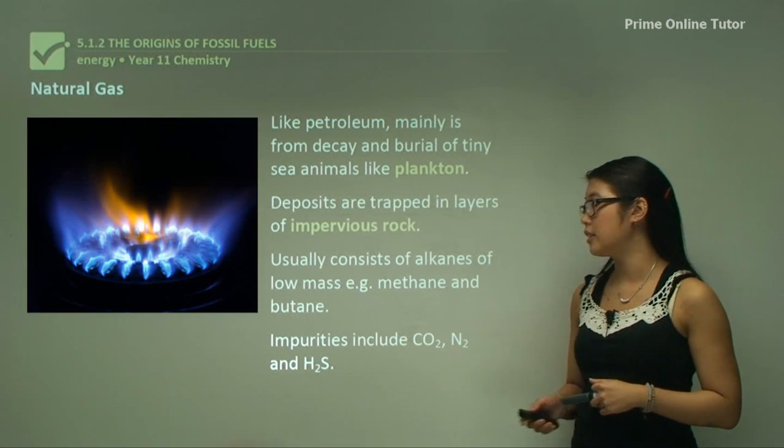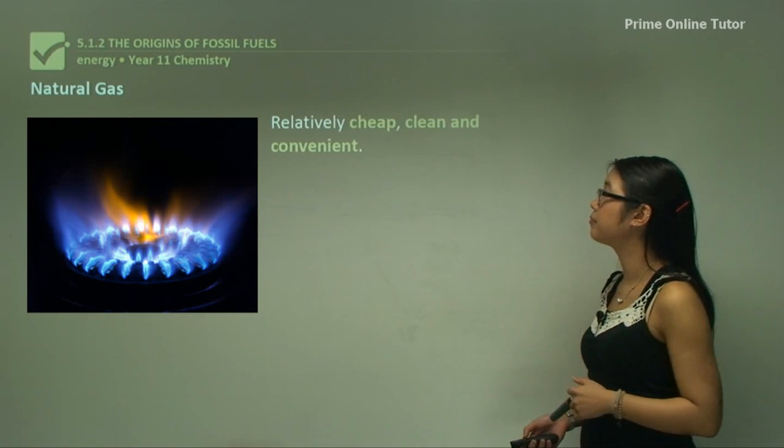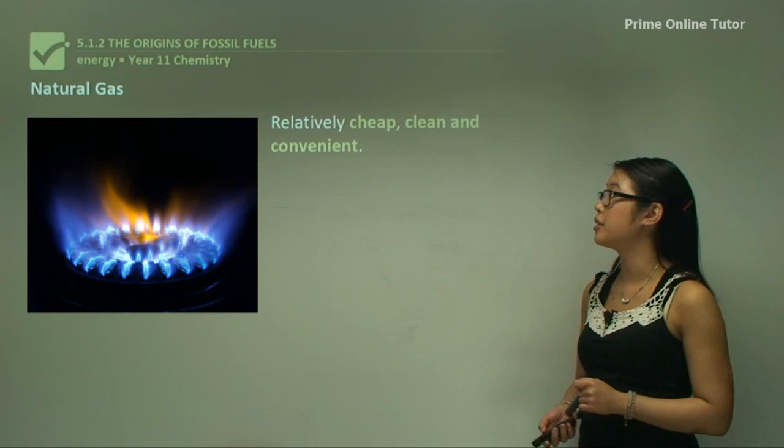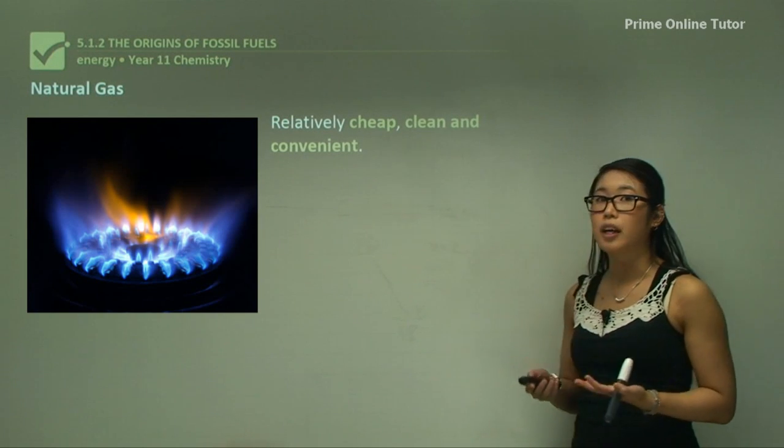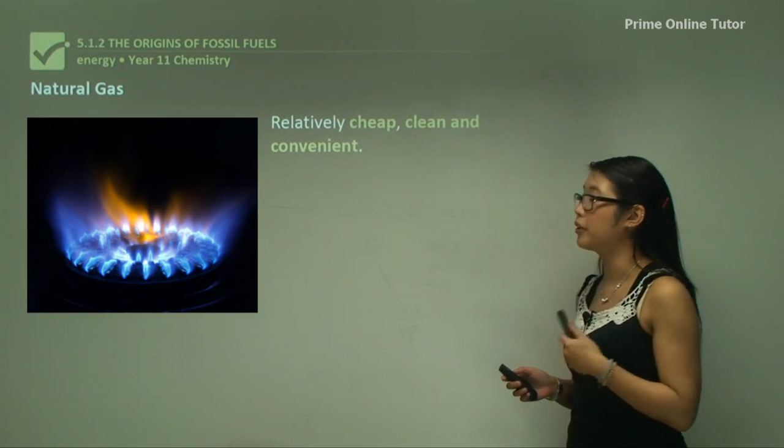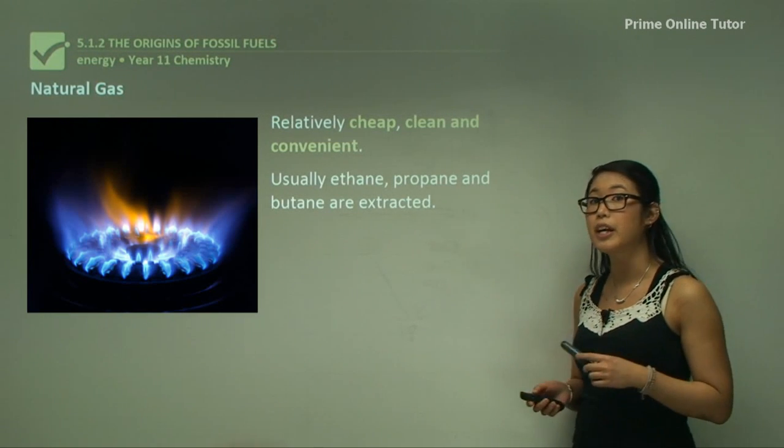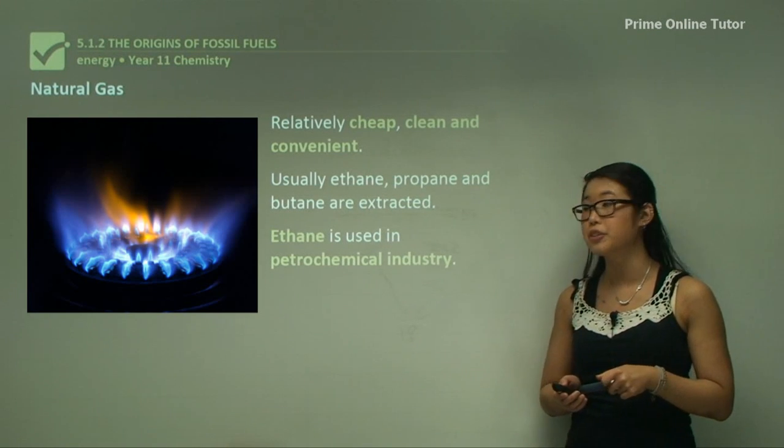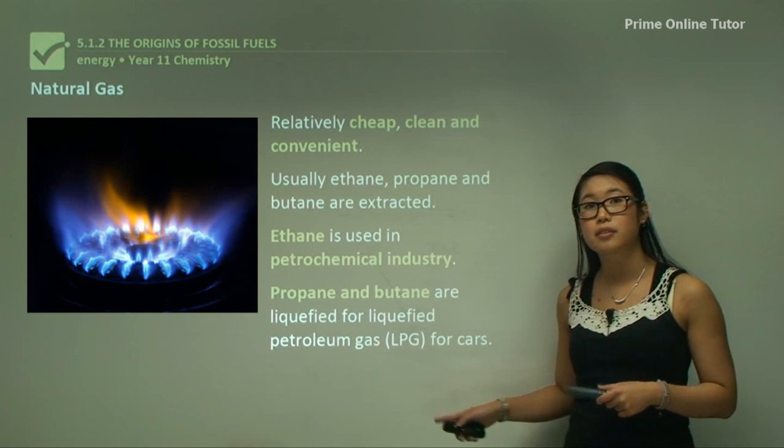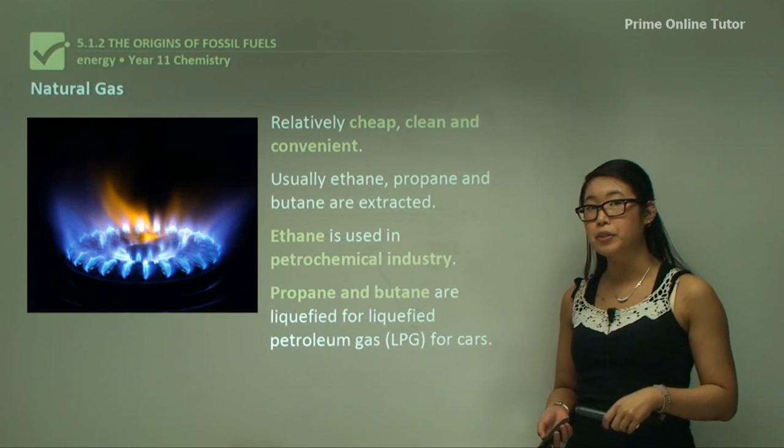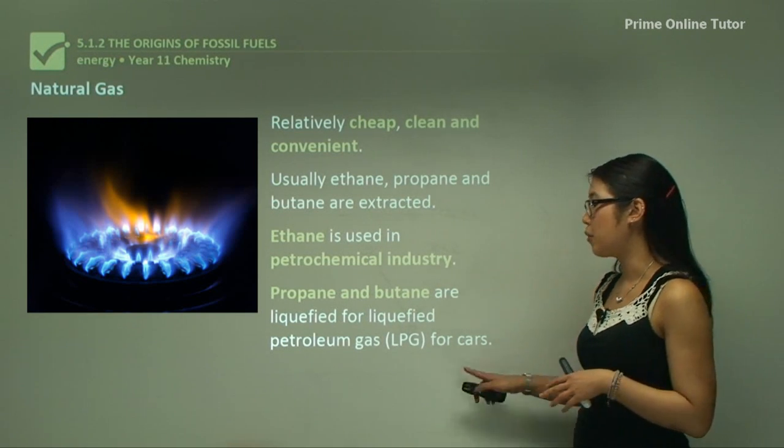Impurities in these fractions are carbon dioxide, nitrogen and hydrogen sulfide gas. Natural gas is relatively cheap compared to other fossil fuels and clean because it combusts properly without much incomplete combustion, and it's a convenient source for heating. Ethane, propane and butane are extracted from natural gas. Ethane is used in the petrochemical industry while propane and butane are liquefied for petroleum gas for cars.